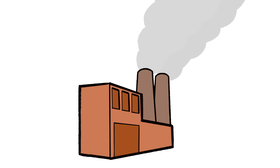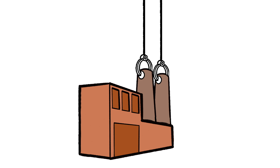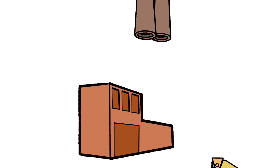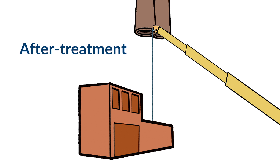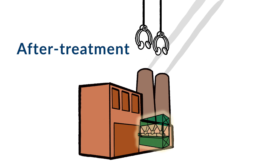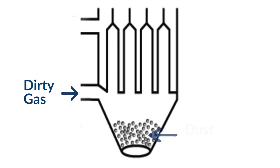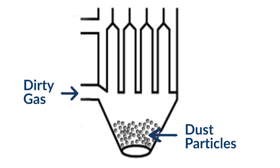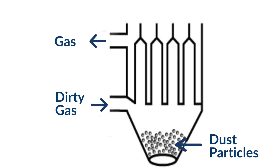Once formed, pollution can be removed from air prior to being released through capture or cleaning. The removal of air pollutants is often referred to as after-treatment. Examples of after-treatment include using a filter to remove particulates or chemically altering emissions to reduce pollution.